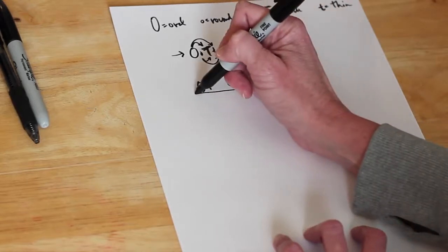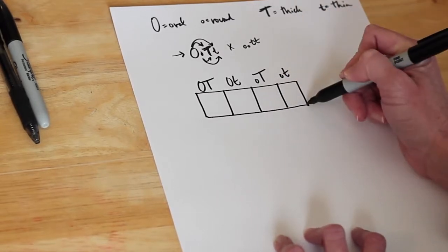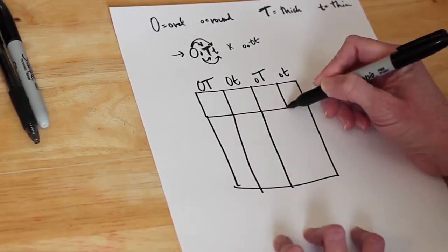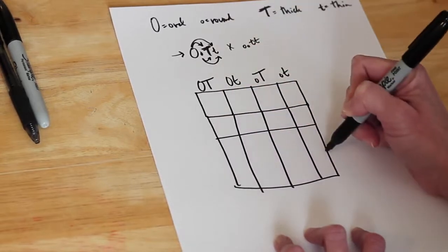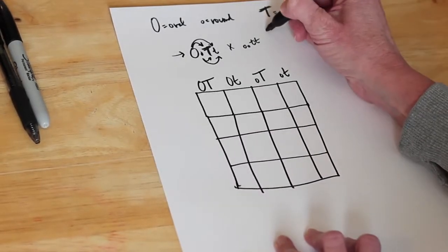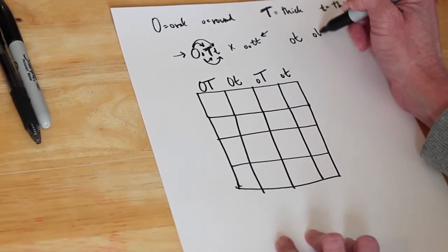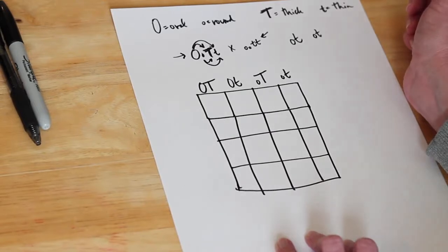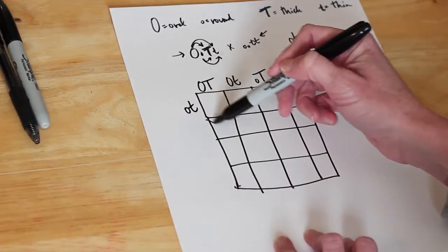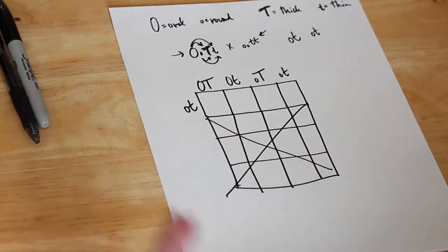For the other parent — the homozygous recessive — I want to point something out. Normally with two traits you'd have a 16-square Punnett square because each parent produces four gametes, giving four times four equals sixteen possible offspring. But this parent's only gamete, no matter how you FOIL it, is always little o, little t — that's the only allele it has to offer. So we only need one gamete and don't have to repeat the ratio four times.